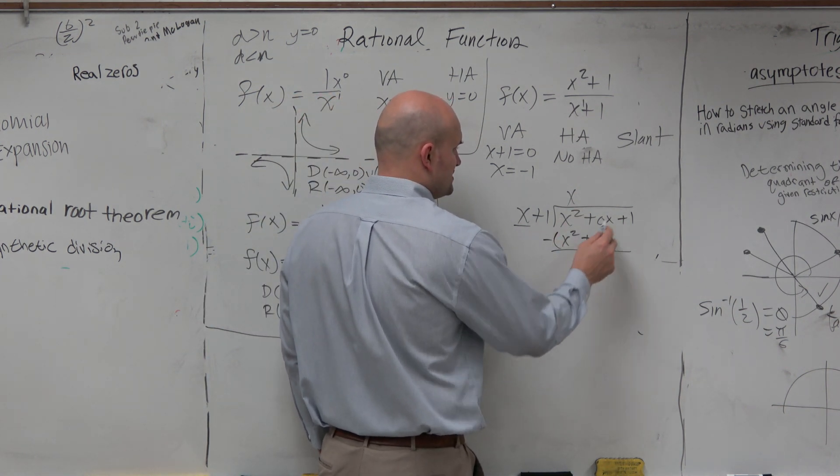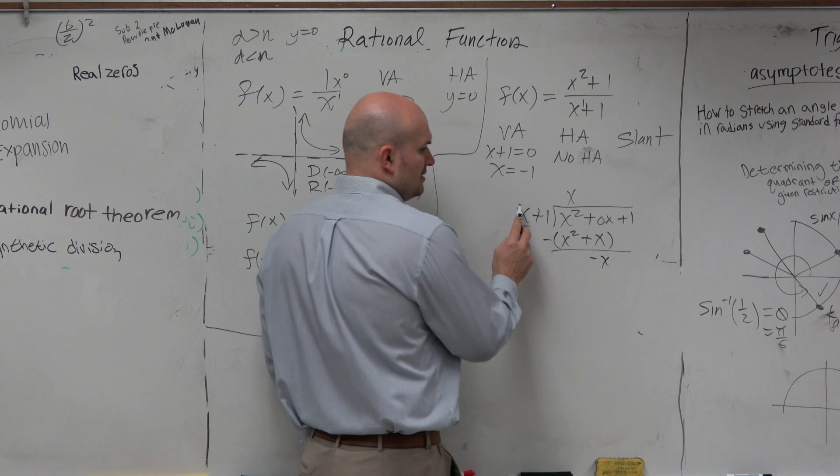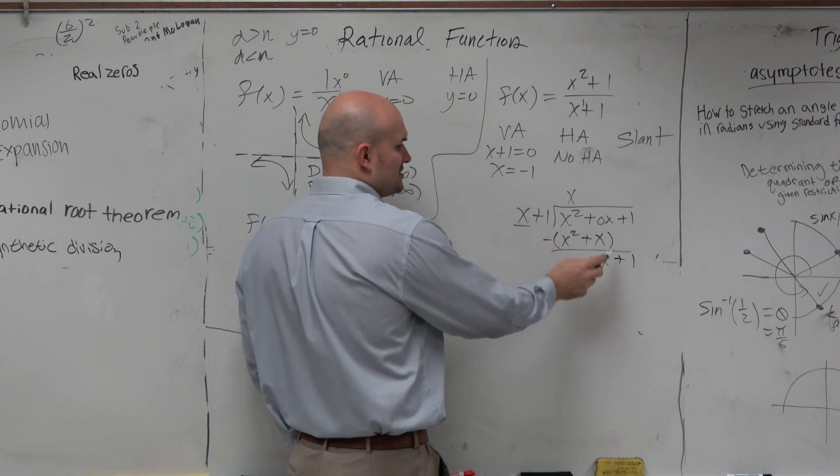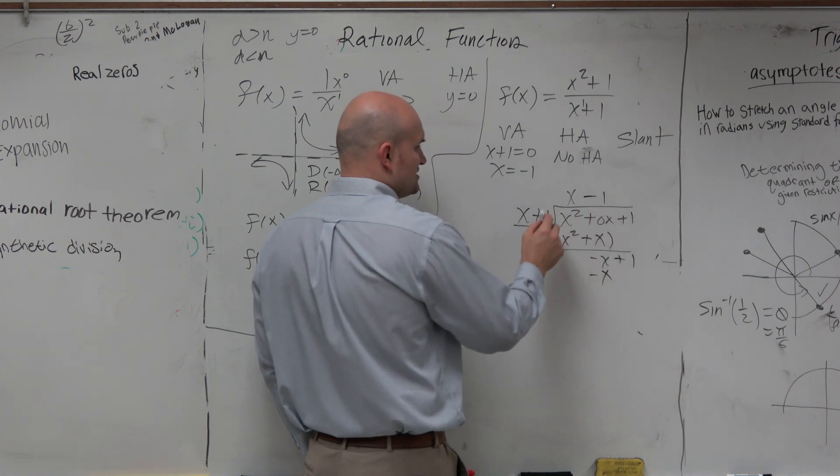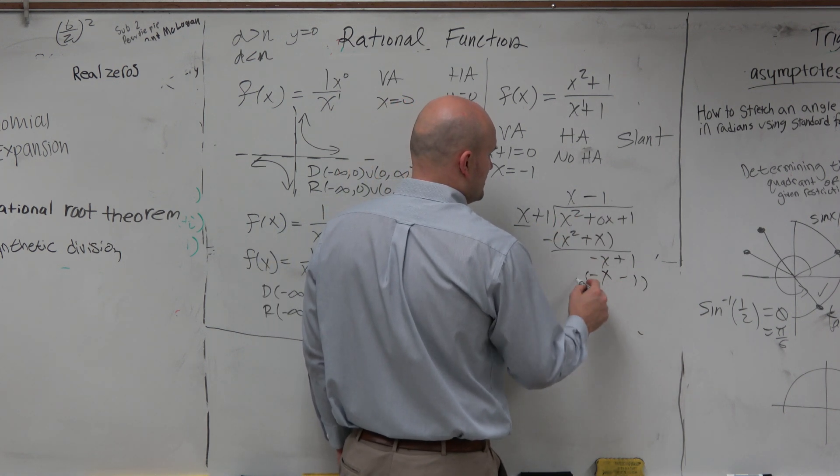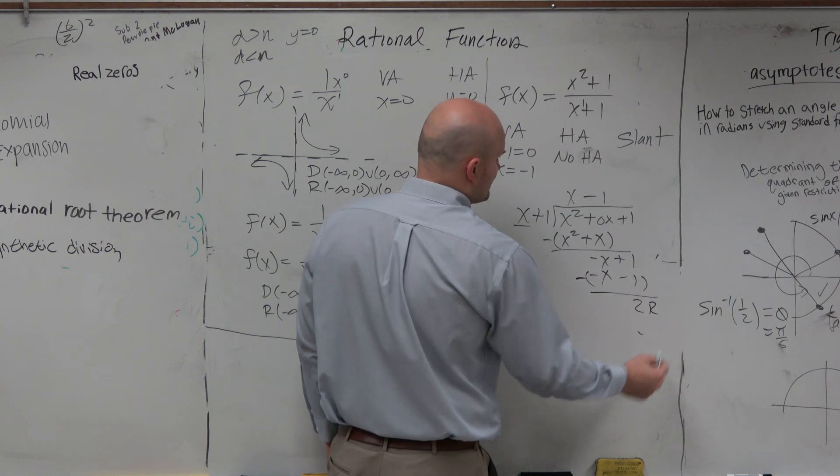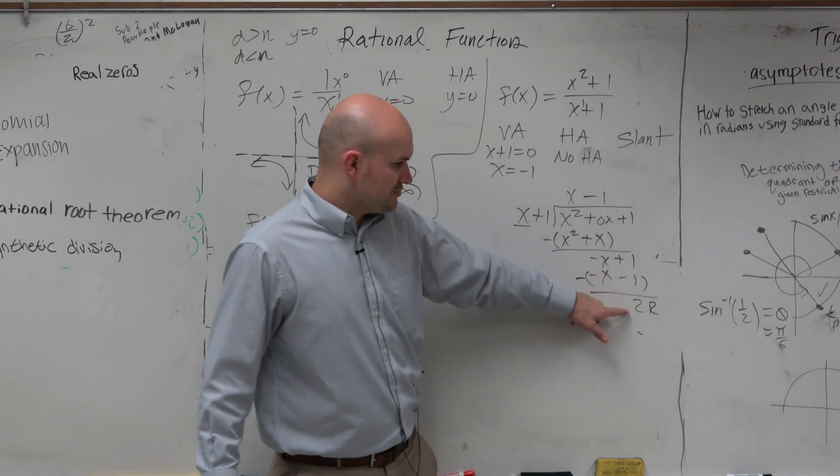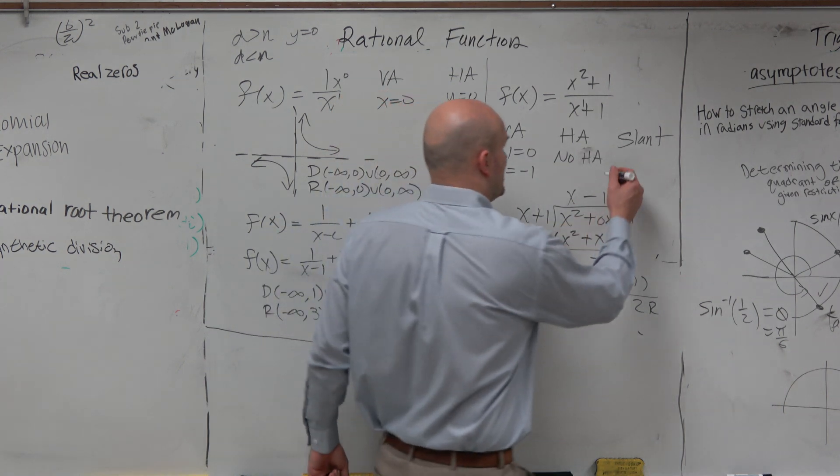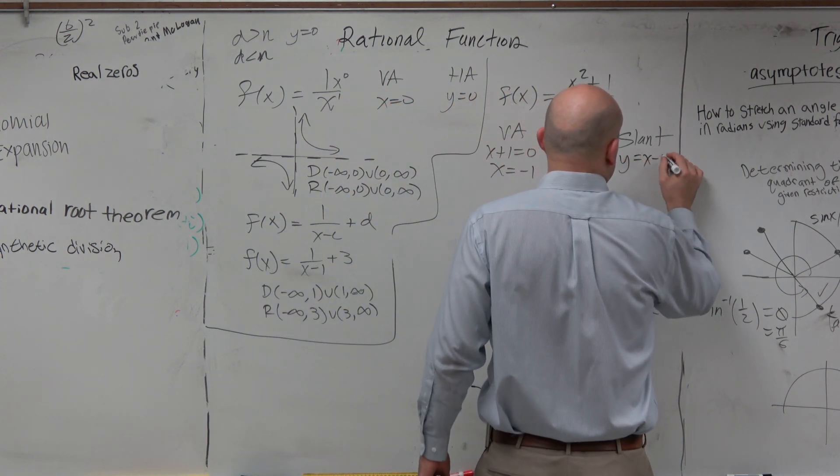You might want to create a place value here, just so you kind of feel easy to subtract. Subtract my rows. That goes to 0, that's a negative x, and that's plus 1. x goes into negative x, negative 1 times. That becomes a negative x, and that becomes a negative 1. Subtract your rows. And remember, when you subtract that, that's a 1 minus a negative 1, which is really 2. But remember, that's a remainder. But we don't care about that. We just want the quotient.